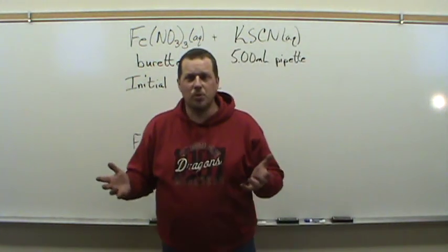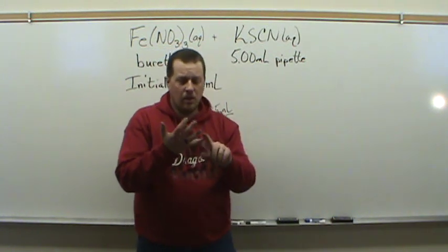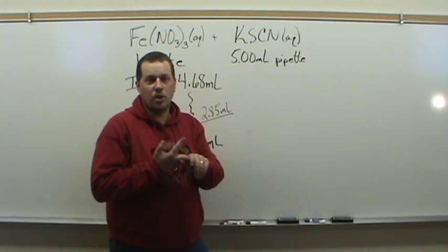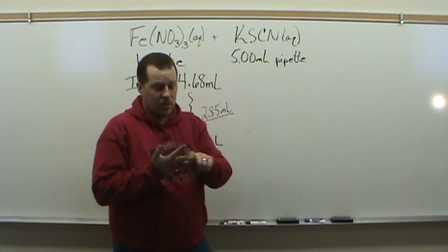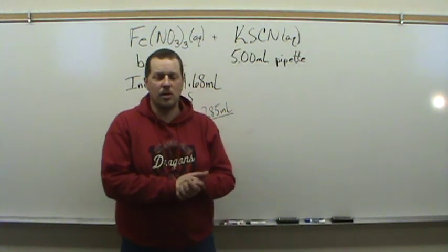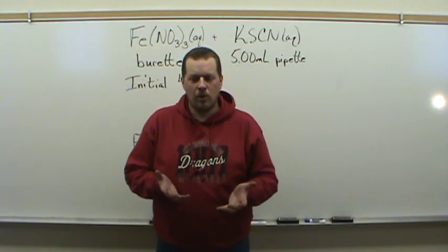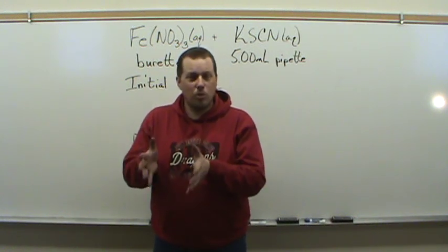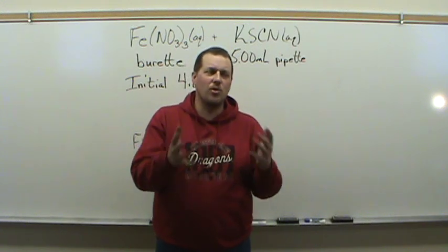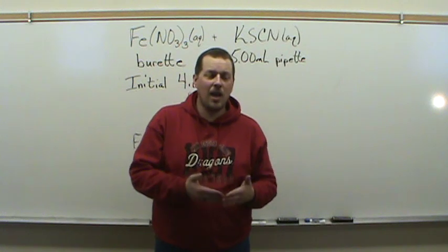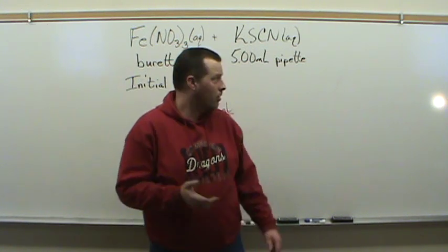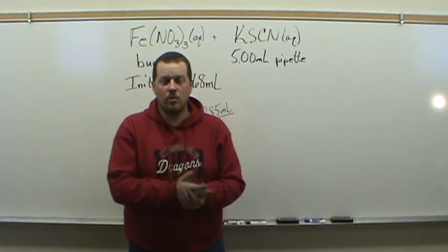That's pretty much the experiment for this week. Three parts: first, determine what's reacting; second, use a large excess of iron nitrate to push the reaction to completion and determine the Beer's Law constant; third, make up samples and measure their absorbance to calculate equilibrium concentrations. This is a two-week experiment, but most of the experimental work should be done in the first week. The second week we'll look at calculations and discuss any issues.